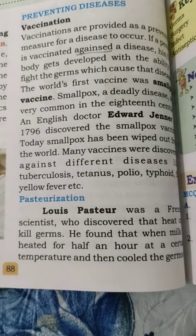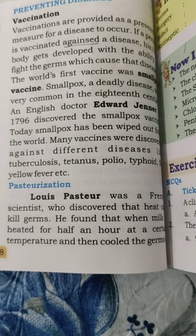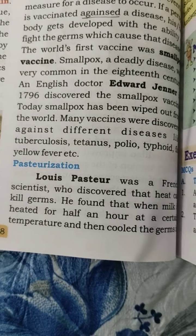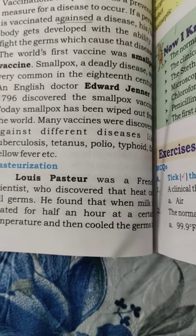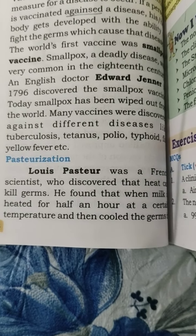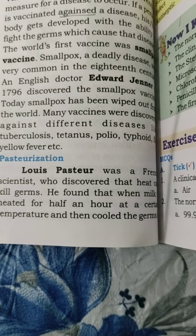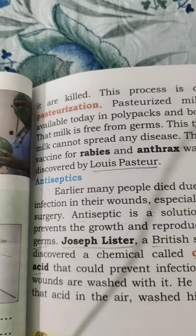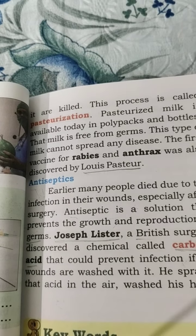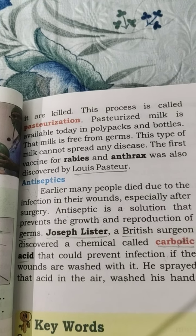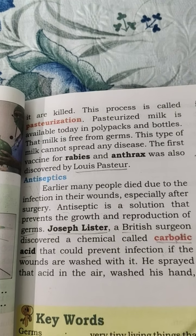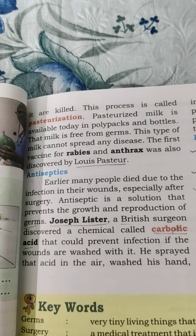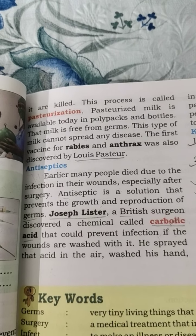Next, we will see pasteurization. Louis Pasteur was a French scientist who discovered that heat can kill germs. He found that when milk is heated for half an hour at a certain temperature and then cooled, the germs in it are killed. This process is called pasteurization. Pasteurized milk is available today in polypacks and bottles — that milk is free from germs and cannot spread any disease. The first vaccine for rabies and anthrax was also discovered by Louis Pasteur.